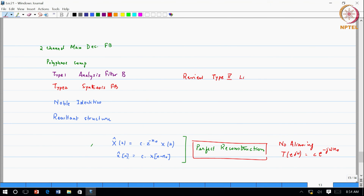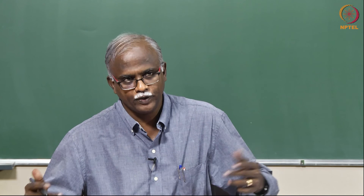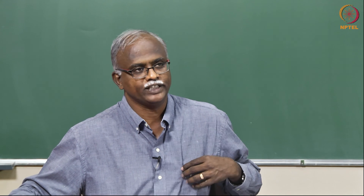Type 2 linear phase is covered in Oppenheim and Schafer. The portion covered today is in P. P. Vaidyanathan's book, Chapter 5 — definitely read it, as it will set the stage for everything we discuss in the next class. Thank you.